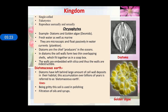Kingdom Protista are single-celled eukaryotes and they reproduce sexually or asexually. The first class is chrysophytes, which contain diatoms and golden algae. They occur in fresh water as well as marine habitat. They are microscopic and float passively in water currents. Diatoms are the chief producers in the ocean. The cell wall forms two thin overlapping shells, just like a shoe box. When diatoms die, they leave behind a huge deposit of cell walls known as diatomaceous earth, which can be used for filtration of oil and syrups and for polishing.